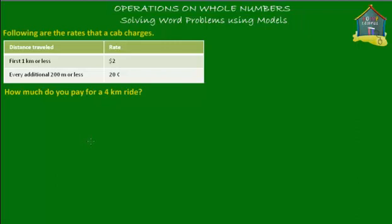Welcome to homecampus.com.sg. Let's solve a word problem on odd numbers. In this word problem we have a table. It's nothing different from how you solve a regular word problem — it's just that the information given to you about this problem is in a tabular form. So let's read the word problem first.